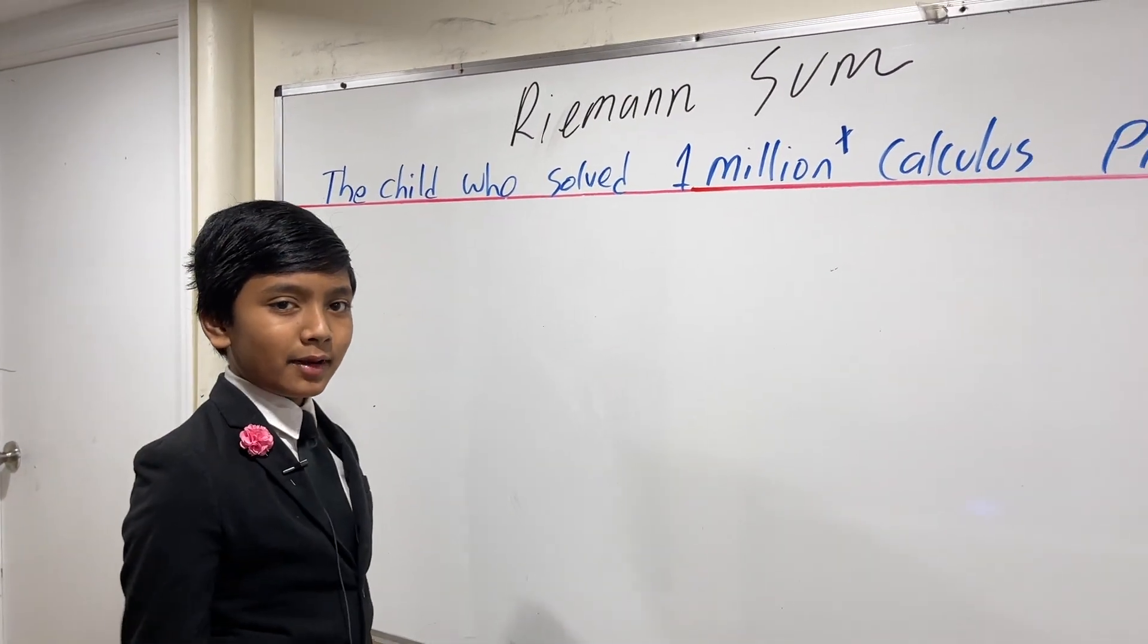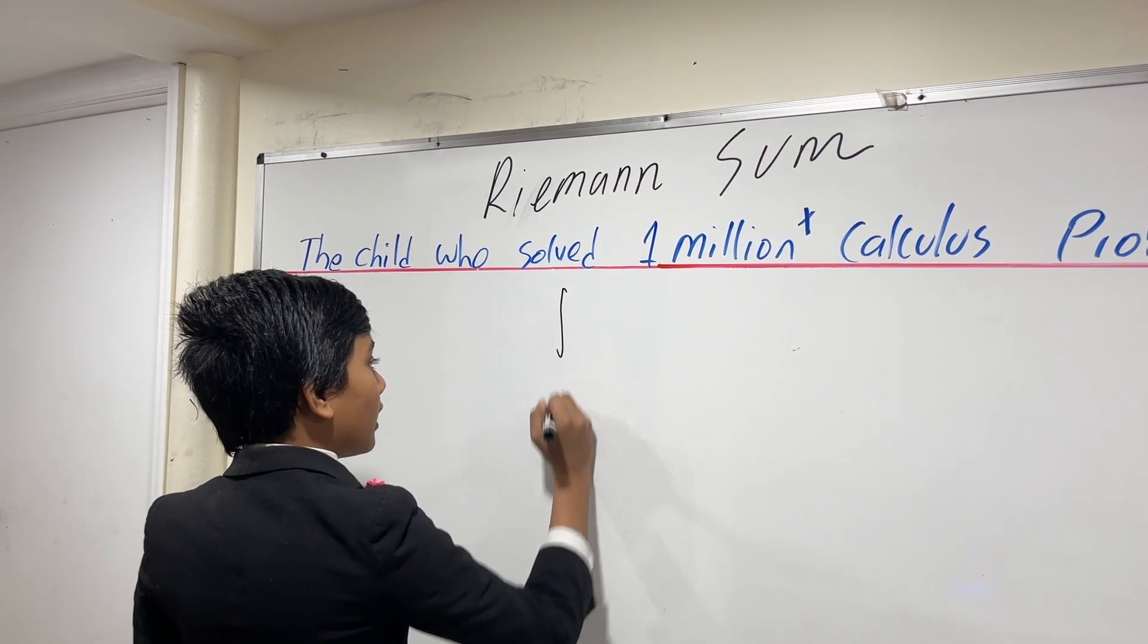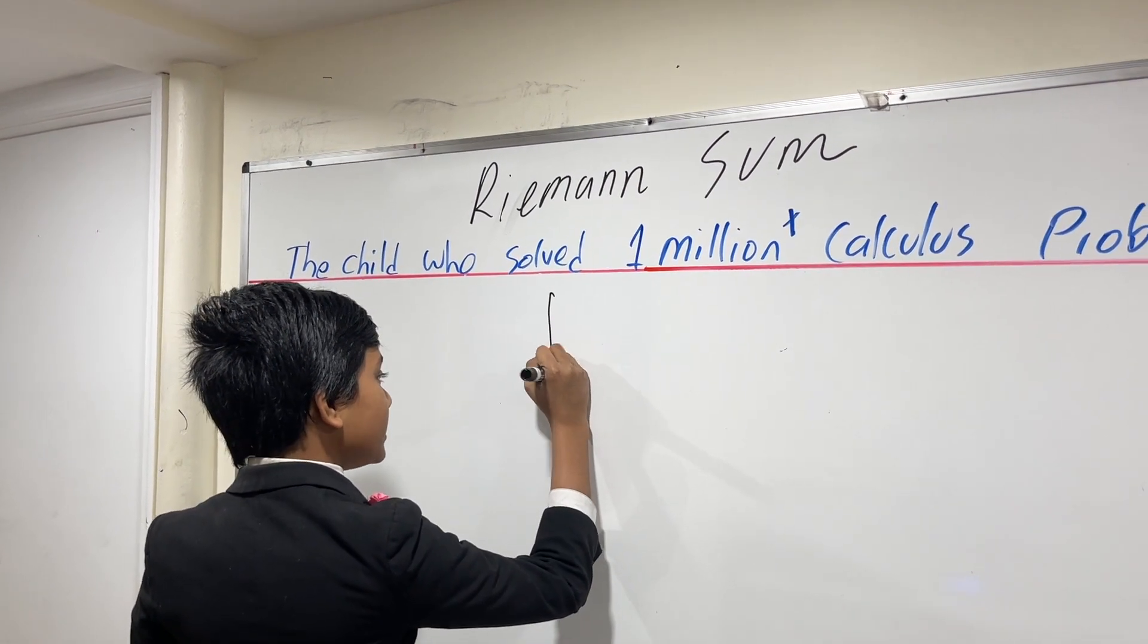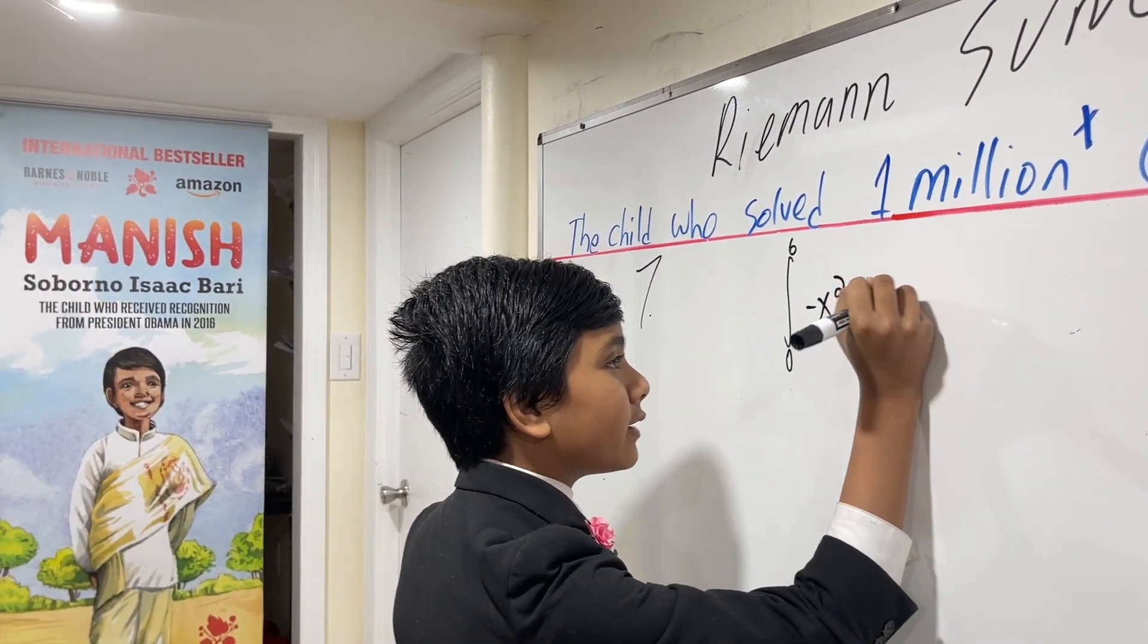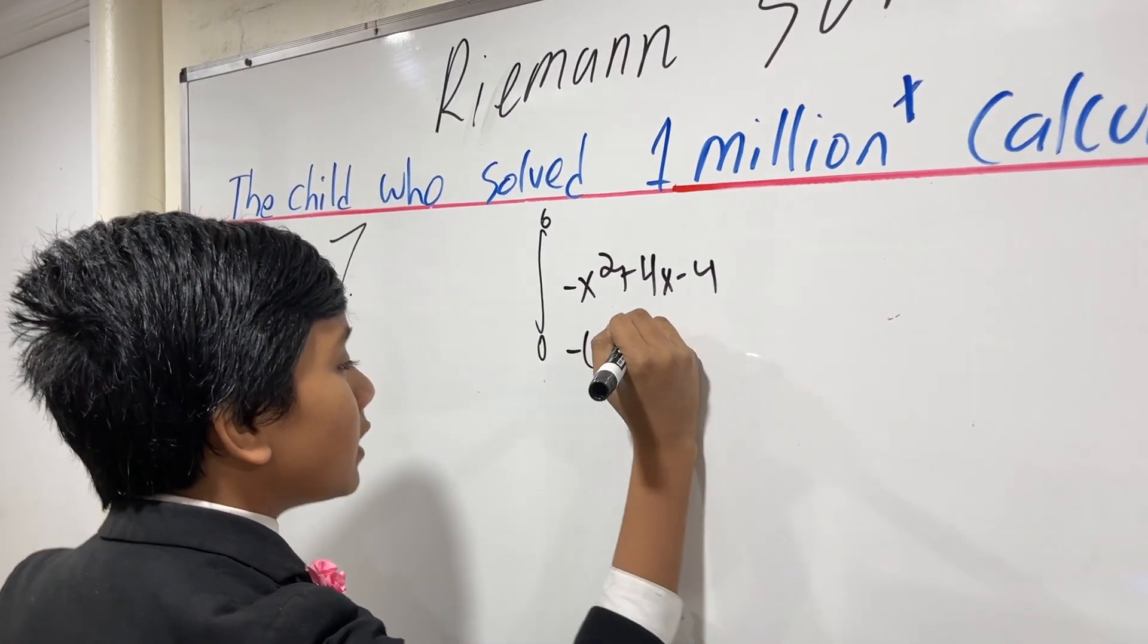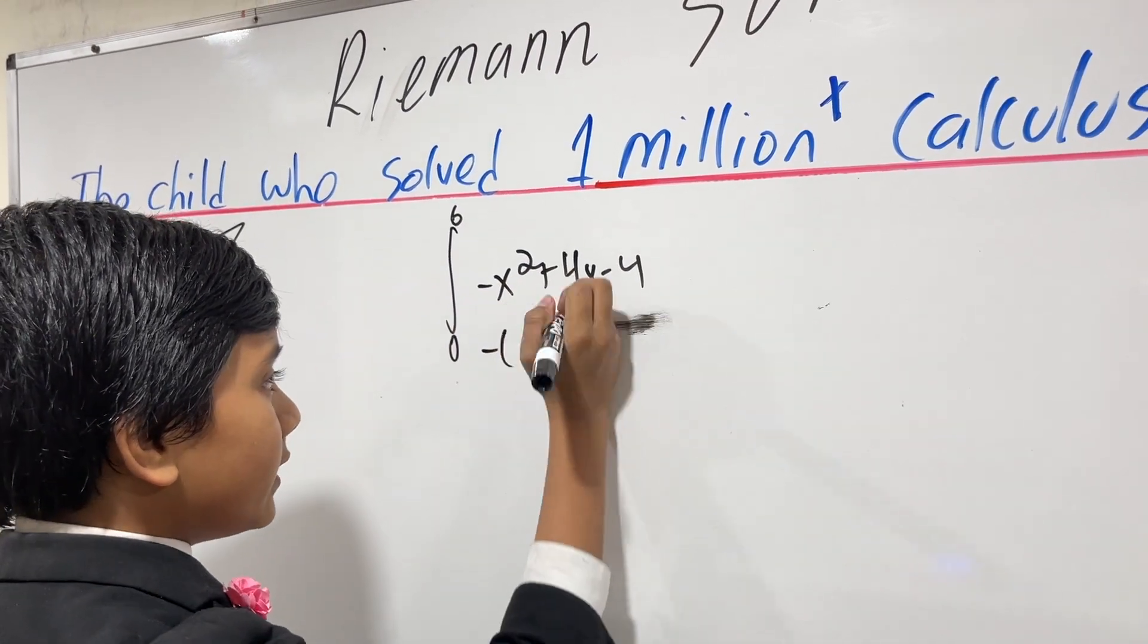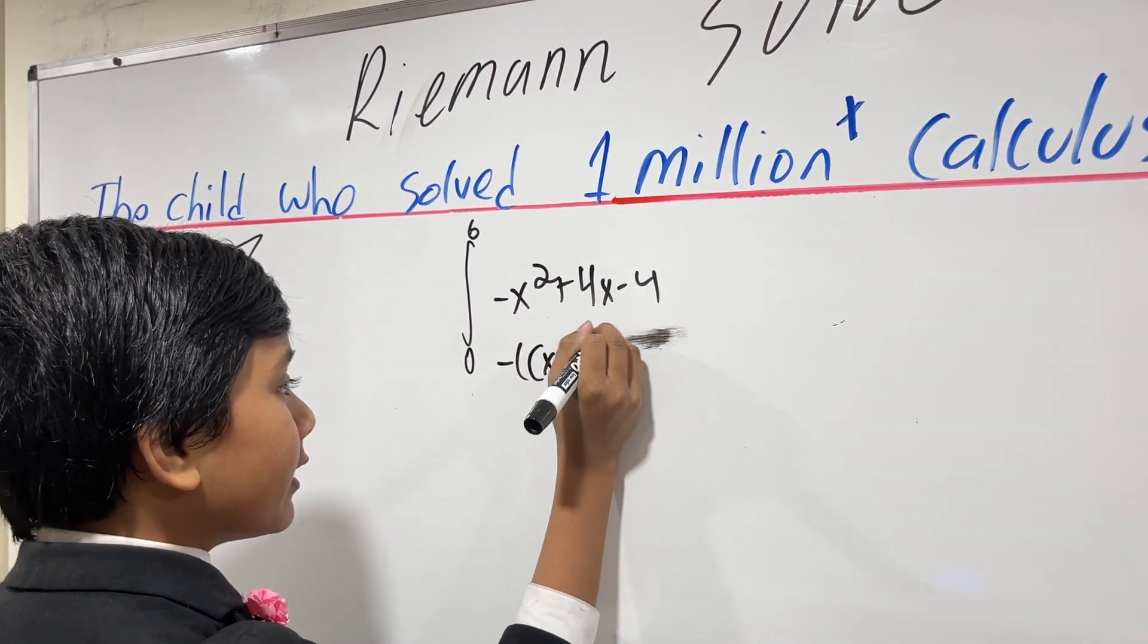Let's just get to the Riemann sum. Hello everybody, my name is Soborno Isaac Bari, Bari Science Lab. And today we're going to be doing a midpoint rule approximation to negative x squared plus 4x minus 4. What you might recognize is the negative version of x squared minus 4x plus 4, which can be also rewritten as x minus 2 squared.